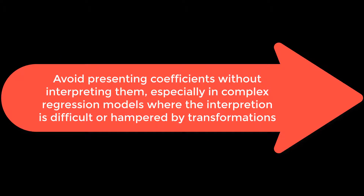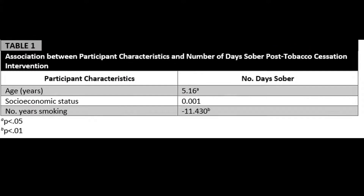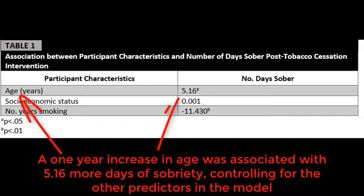You want to avoid presenting coefficients without interpreting them, especially in complex regression models where the interpretation is difficult or hampered by transformations. Take this hypothetical example, where the table lists some associations between participant characteristics and number of days sober post-tobacco cessation intervention. We would interpret the first association as: a one-year increase in age was associated with 5.16 more days of sobriety, controlling for the other predictors in the model.